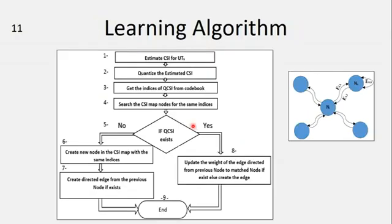This is the learning algorithm that should be used to learn the CSI map. First, estimation of the CSI should take place. After the estimation, we should quantize this CSI and get the quantization indices from a codebook. After that, we should search the CSI map for this node. If this node exists, then just update the transition or the edge that leads to this node. If the quantized CSI does not exist, create a node to represent this CSI and connect this new node to the previous nodes.